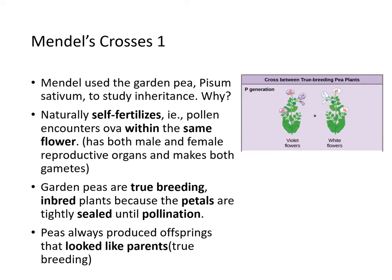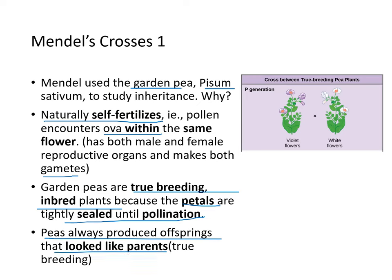He used garden peas, Pisum sativum, to study inheritance. Peas naturally self-fertilize — pollen encounters the ovule within the same flower, which has both male and female reproductive organs and makes both gametes. Garden peas are true breeding inbred plants because the petals are tightly sealed until pollination. Peas always produced offspring that look exactly like the parents, which is what true breeding means. If you cross a true breeding purple plant and white plant, what would you expect to get?